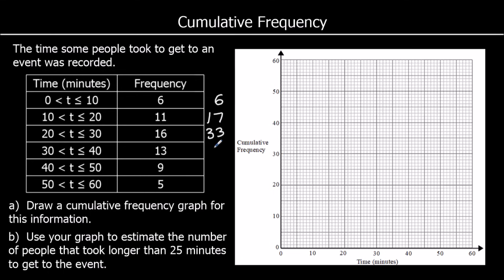Then for zero to 40, add on 5, giving 38. And there are 60 people in total. We're going to plot this on the graph — always using the top point for cumulative frequency. So: 10 minutes against 6 people, 20 minutes against 17, 30 minutes against 33, 40 minutes against 38 (approximately), 50 minutes against the next value, and 60 minutes against 60. And again, a smooth curve to join up the points.